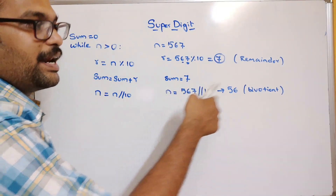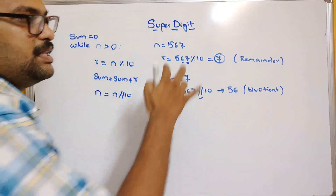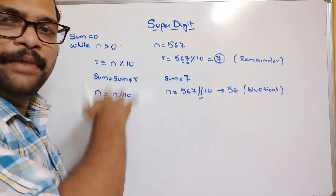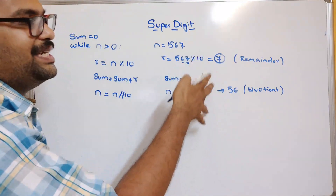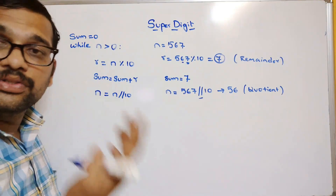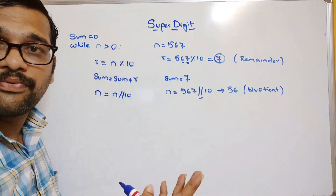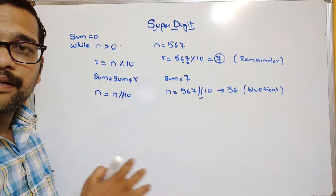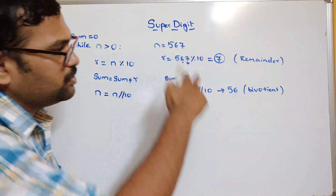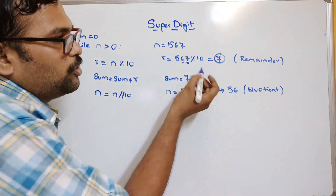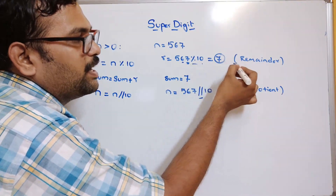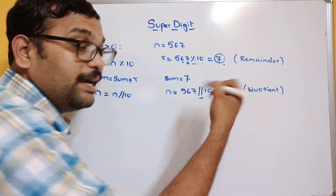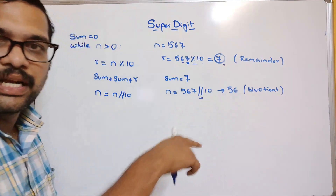This process gives the individual digit and reduces the number. These concepts are important — they apply to Armstrong numbers, reversing a number, finding individual digits, and summing all digits. If you apply mod with 10 you get the individual digit; if you apply floor division by 10 you reduce the number.